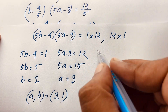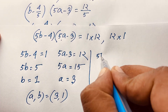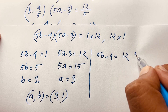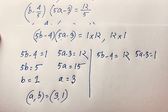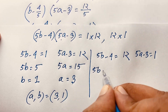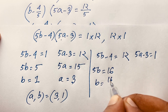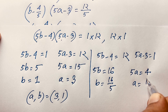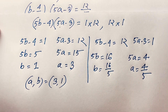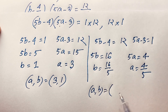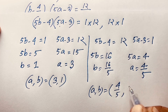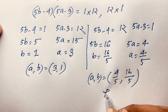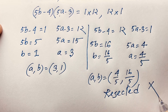Case 1b: 5B minus 4 equals 12 and 5A minus 3 equals 1. Then 5B equals 16, so B equals 16 over 5, and 5A equals 4, so A equals 4 over 5. This gives (A, B) = (4/5, 16/5), which is rejected because these are not integers.